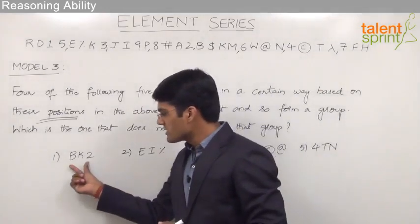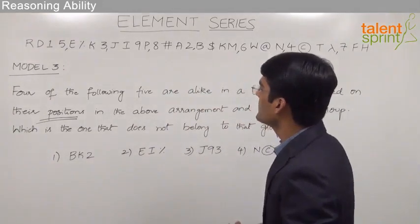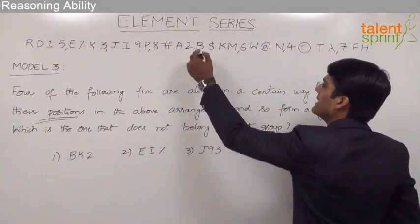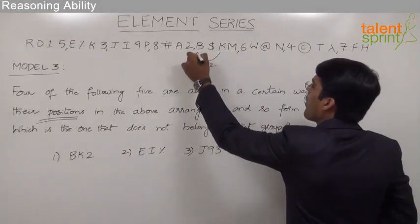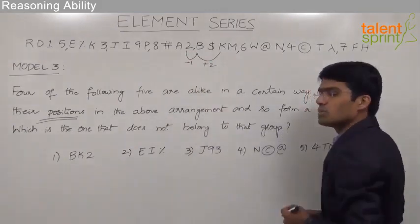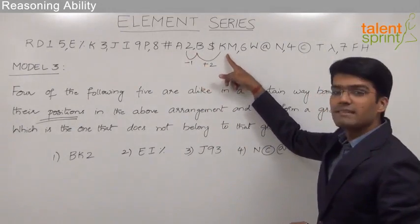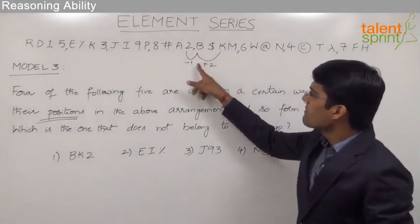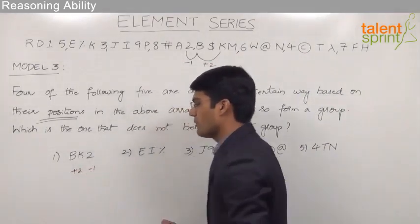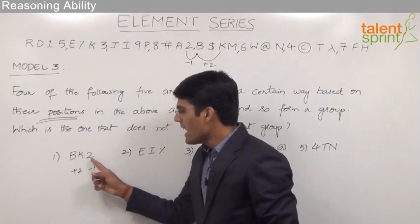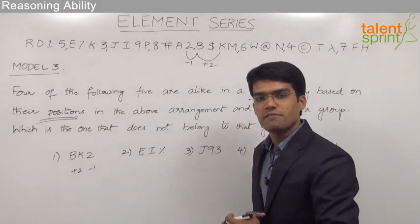So let us look at the logic in the positions of the first set of elements that is BK2. From the above series we can find B in this position plus two elements away gives K and one element before gives 2. So the idea here is B plus two positions away is K and one position back is 2. To understand the positioning we can take it as plus 2 minus 1, which means K is plus 2 positions from B and 2 is minus 1 positions from B. So that is on right side and left side of B respectively.